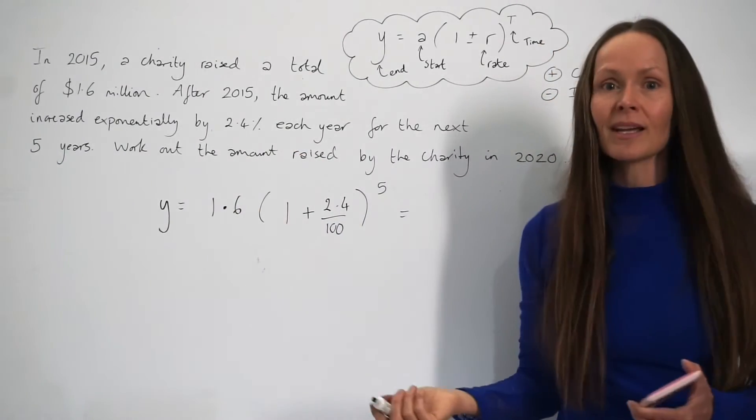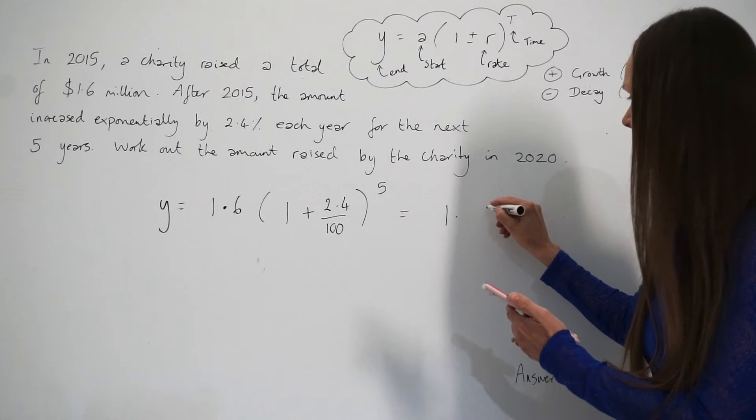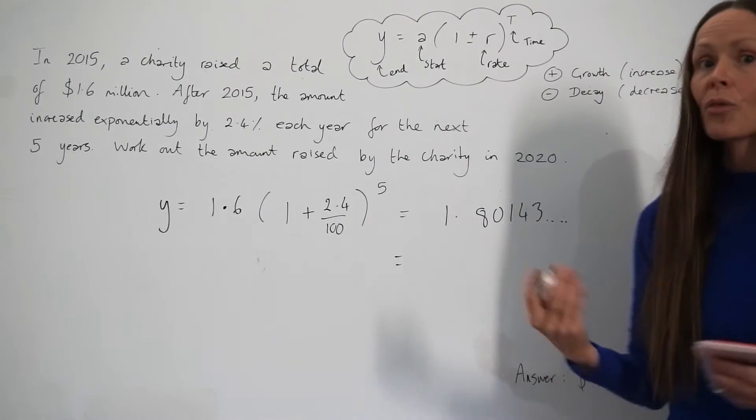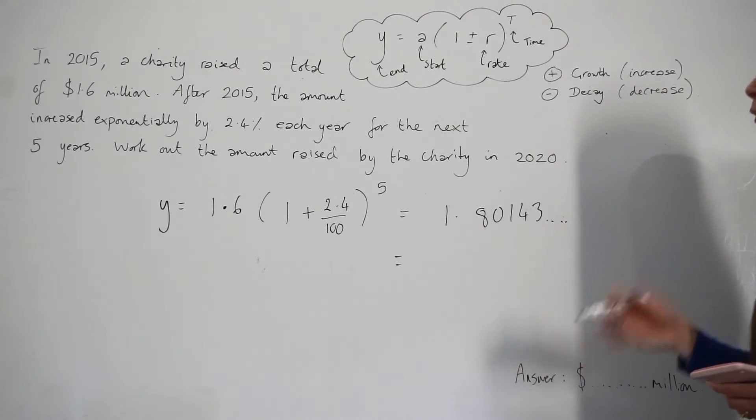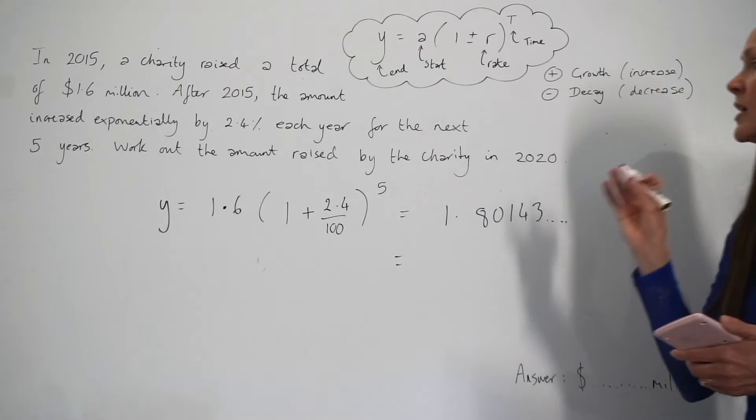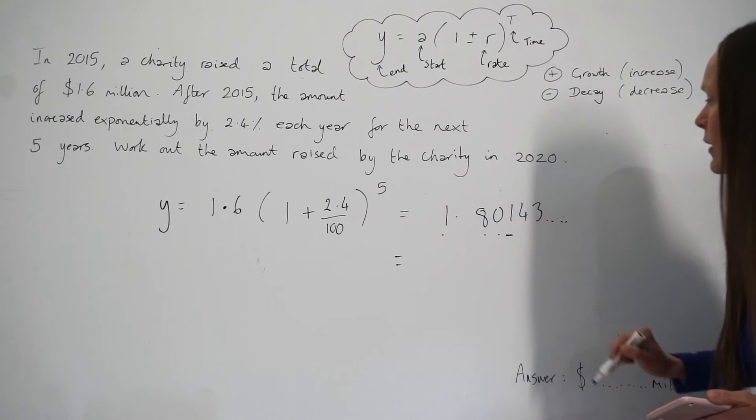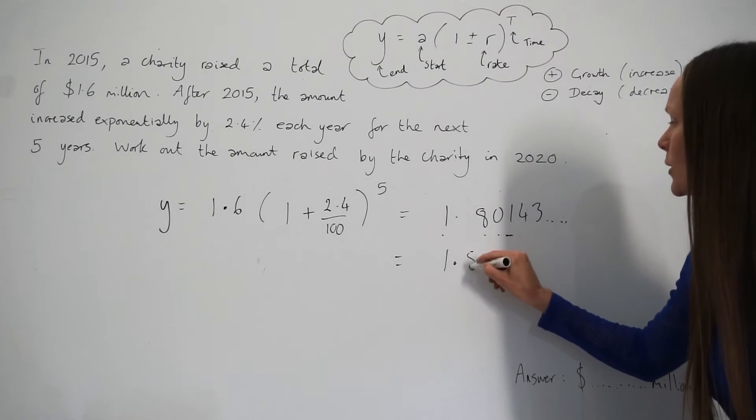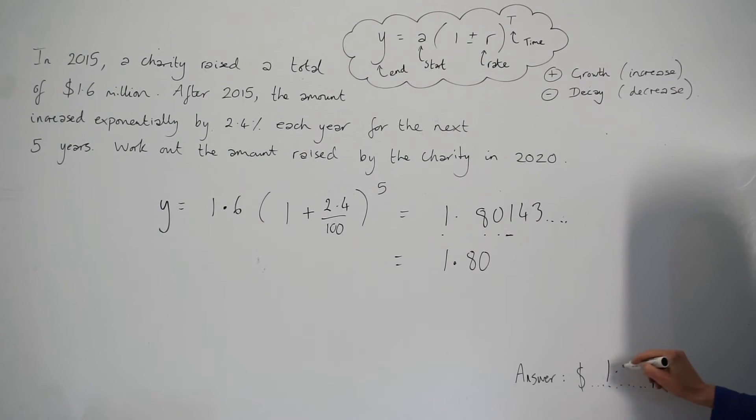So now you can type this into your calculator. And when you do that, you find that it is 1.80143, and so on. And I'm going to round my answer to three significant figures, as that's what's required for this exam with Cambridge. But always check with your exam board how they expect you to round to make sure you get full marks. So three significant figures, one, two, three. Check the fourth figure. This figure is smaller than five, so it doesn't round this value up. It just stays a zero. So the final answer is 1.80. So you can write your answer down here. That is 1.8 million.